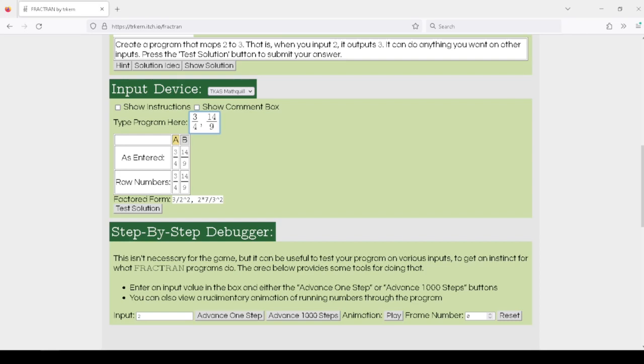MathQuill is perfectly fine to have commas throughout an expression, so you'll want to avoid having commas in the numerator and denominator. You'll have to use the right arrow key to break out of fractions, just like you break out of exponents, so you can put commas between fractions.